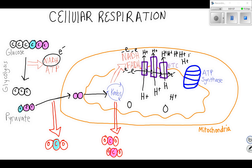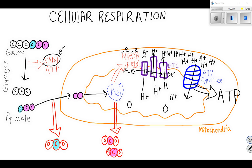If you're thinking to yourself, why would I want a high concentration of hydrogen ions? I'm right there with you — I know, it seems weird. But now that we've created this high concentration of hydrogen ions, the hydrogen ions want to spread out. So the hydrogen ions will naturally flow through ATP synthase, and when they flow through ATP synthase, they make ATP.